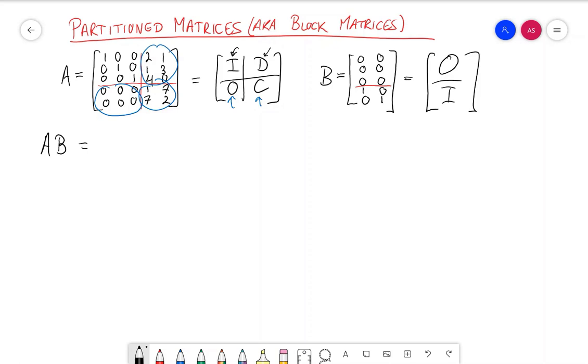Note that the sizes of the blocks must match and we need to keep the left, right order straight. In this case, we have [I D; O C] times [O; I]. I'm pretending that the sub matrices are numbers, that these blocks are numbers and multiplying like that. And I have to keep the order correct.